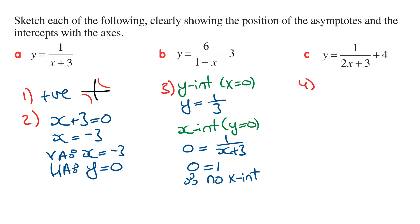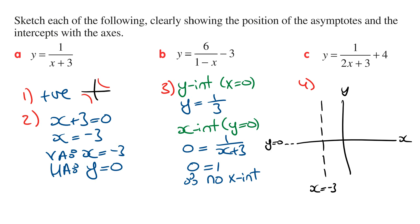The last step is to label these features on the axes and sketch the graph. Drawing the axes, we start by drawing dotted lines for the vertical and horizontal asymptotes, then mark in the y intercept. We know the graph should be in the first and the third quadrant, so we sketch the graph, giving us the graph of y equals 1 on x plus 3.